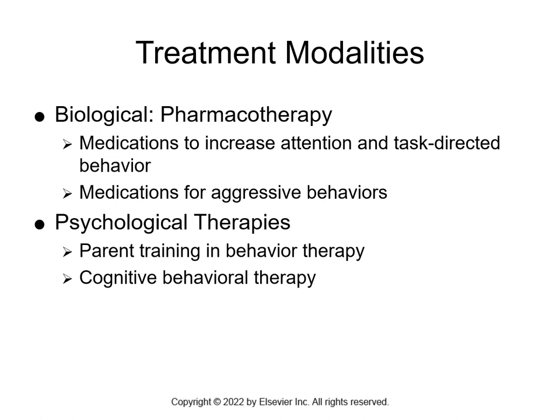Pharmacotherapy involves medications to increase attention and task-directed behavior — those are the stimulants, which we'll discuss further. For aggressive behavior, antipsychotics come into play. We also continue training parents in behavioral therapy so they learn how to interact with the child and the child can perform and get along in the household.